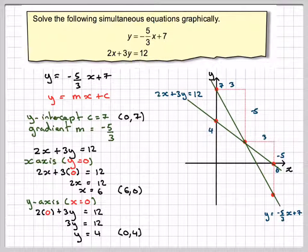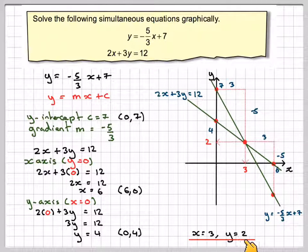Now, for the solution, we need to look for the intercept, which is there. So, we'll read down here, we'll get the x value of 3, and read it this way, and get the y value of 2. So, the solution is x is equal to 3, y is equal to 2.